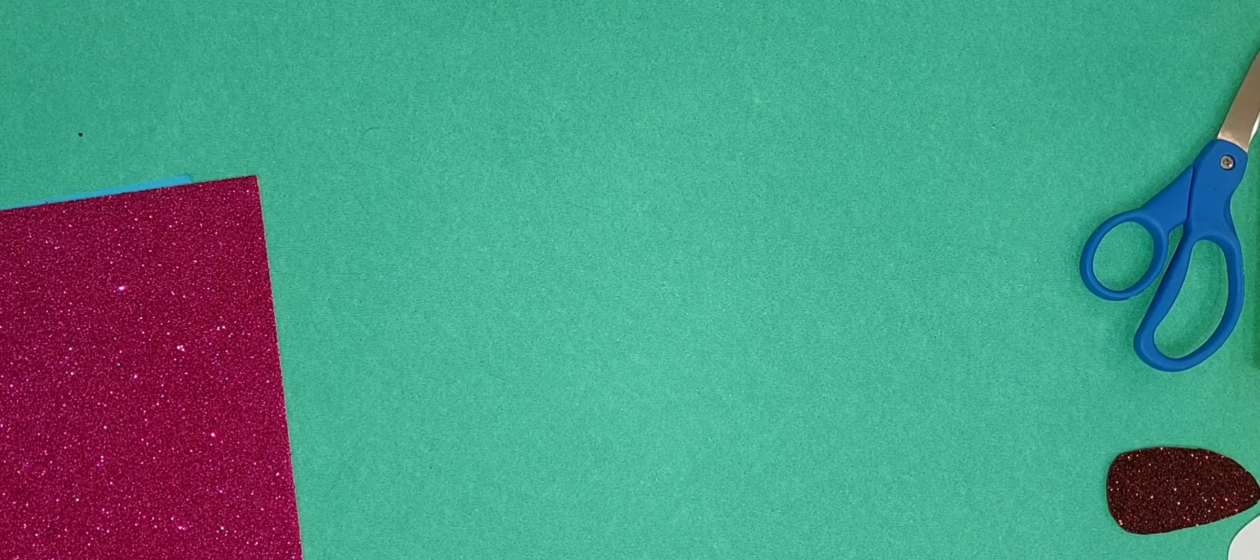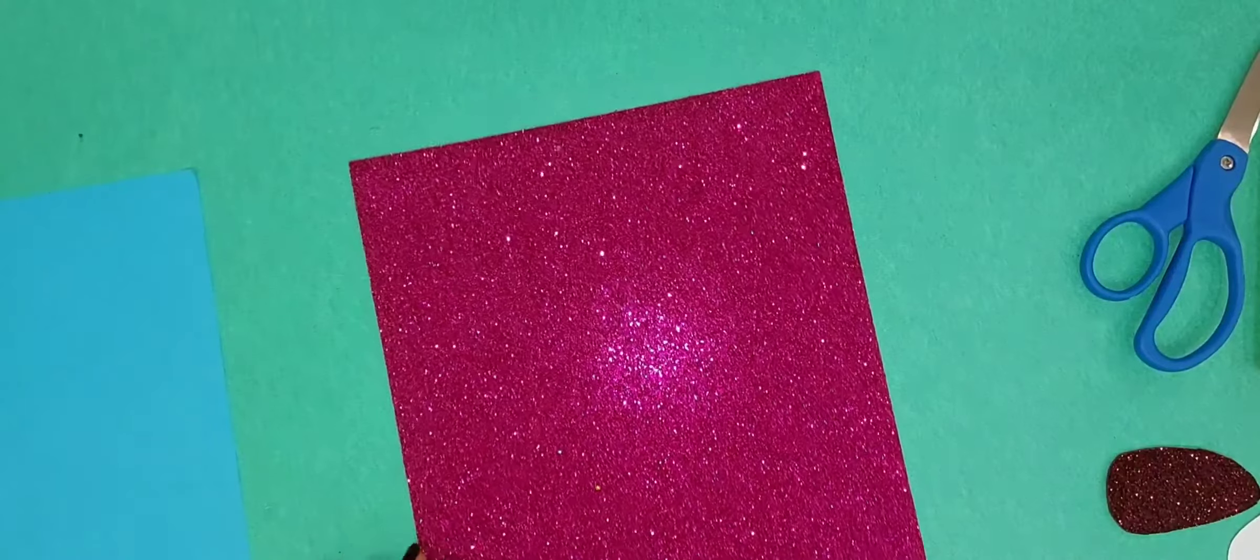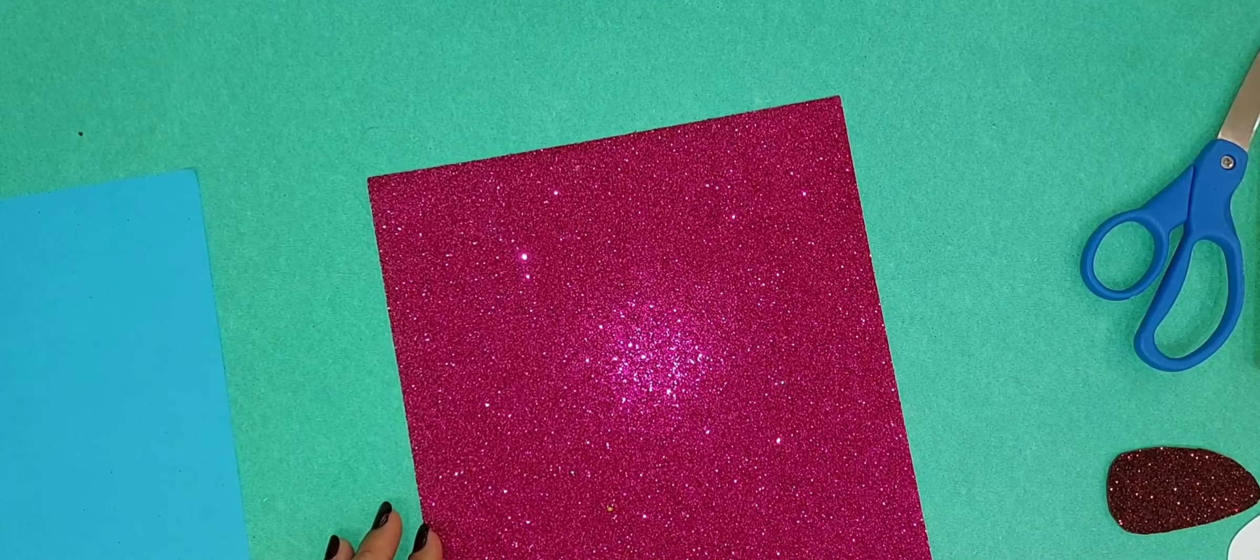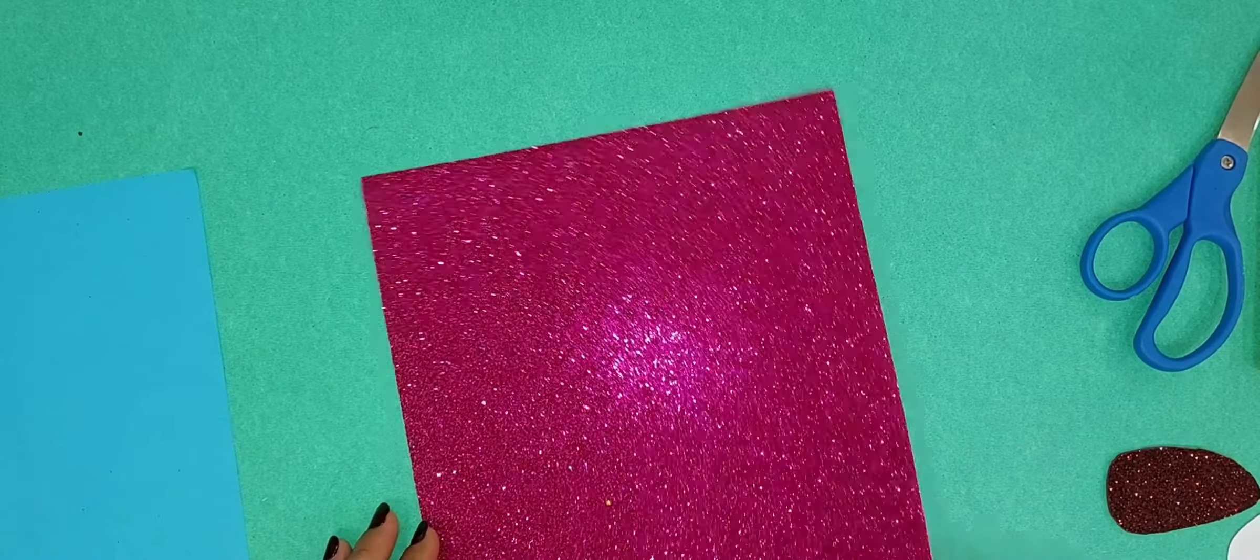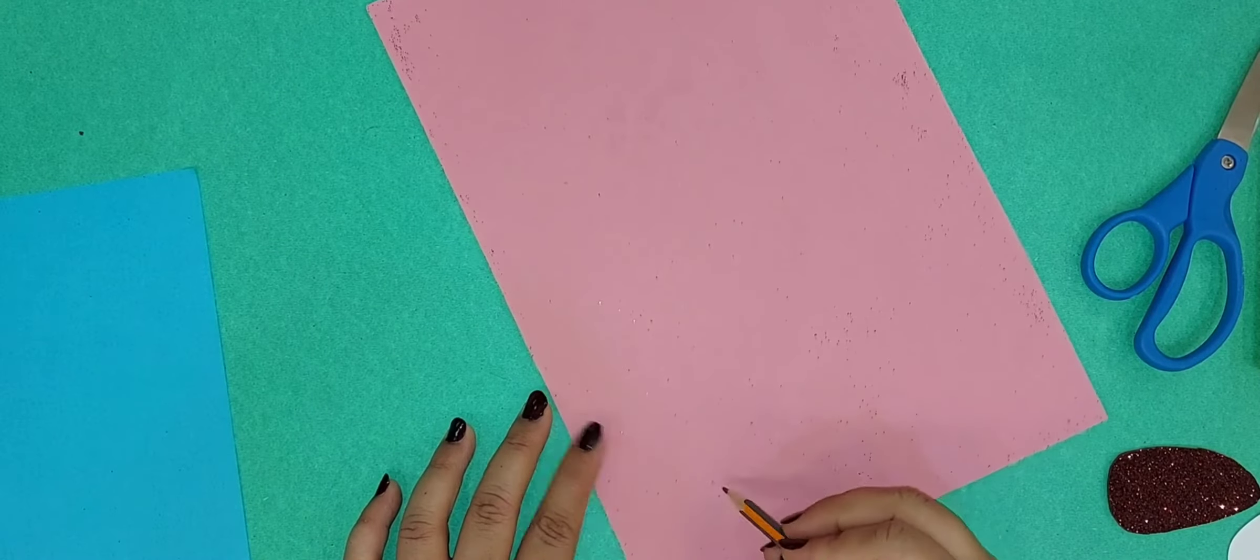Now it's time to take our pink color sheet. You can use red color sheet also. We are going to draw a bow for our cute little raindrop.